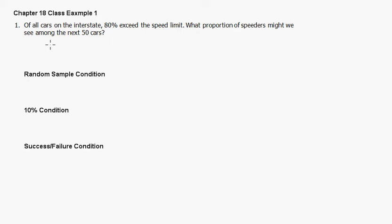Let's take a few notes. The sample size is 50, and we're actually told the true population proportion. This is generally something we're going to try to estimate in the future, but right now we're being told this is it. So what we want to do is, in order to answer this question, what might we see among the next 50 cars?